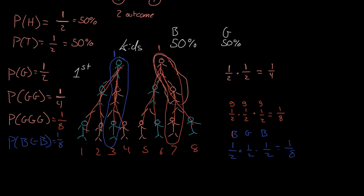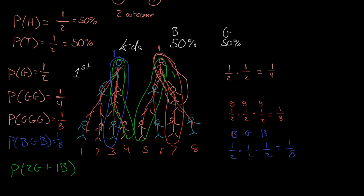Now let's do something a little different. What's the probability of just having two girls and one boy, where order doesn't matter? We could have boy-girl-girl, or girl-boy-girl, or girl-girl-boy. So we have a total of three outcomes out of eight. The probability of having two girls and one boy is three out of eight. I'll show you a neat little trick in the next video about how to calculate this without having to draw out this messy set of lines.